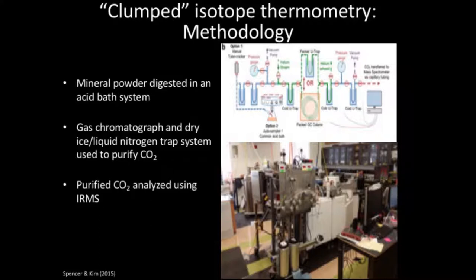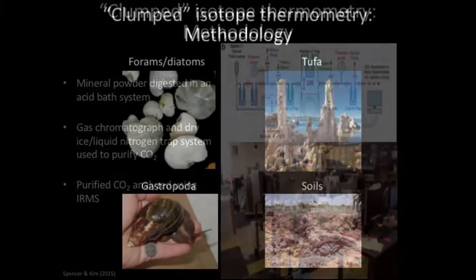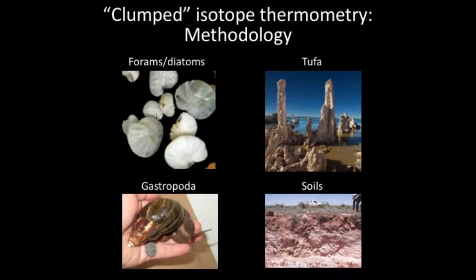Eventually, people are hoping to use the even less prevalent doubly substituted isotopologue — all heavy oxygen, all heavy carbon — which should give an even more precise temperature, but that's getting past the analytical limits of current machines. We get samples from different sources: we can synthetically make them in the lab, or in field settings we get forams and diatoms from marine settings, tufas from alkaline lakes, gastropods like snails and mollusks, and soil carbonates.